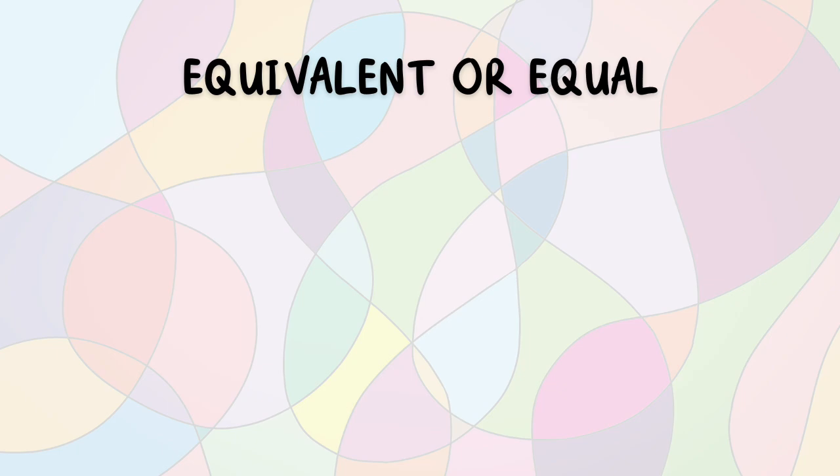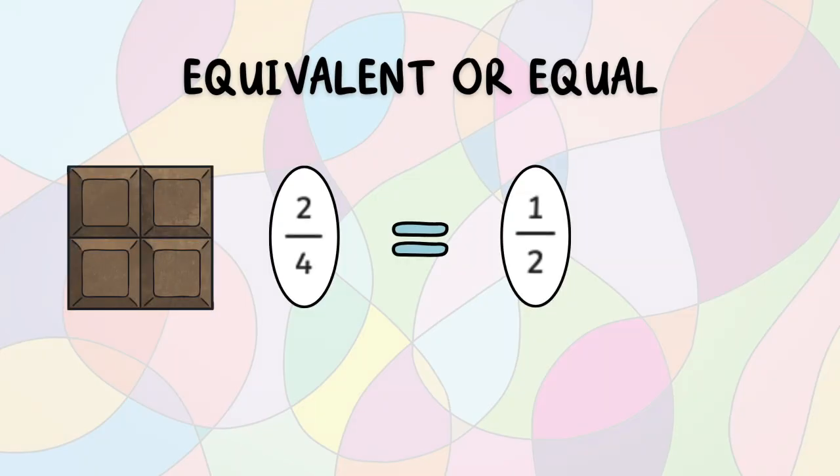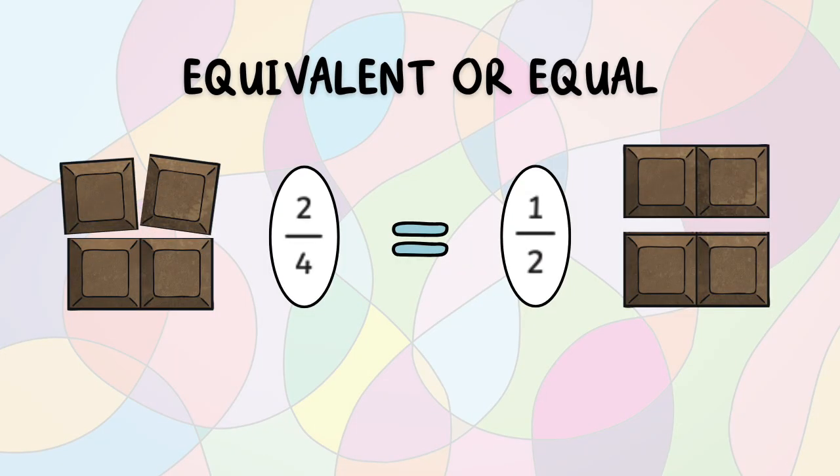Sometimes different fractions can be equivalent or equal. For example, two-fourths is the same as one half because two out of four pieces is the same as one out of two.